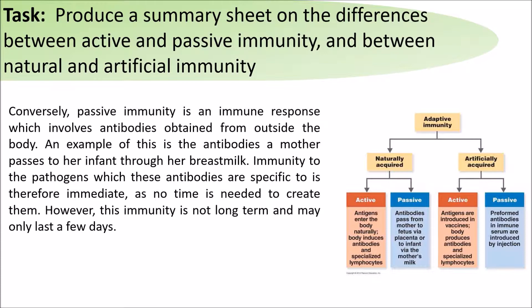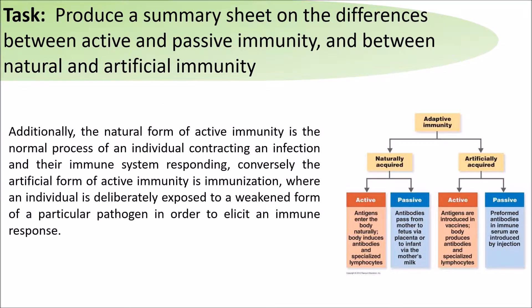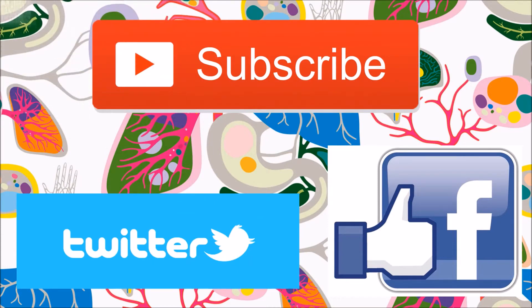The natural form of active immunity is a normal process of an individual contracting an infection and their immune system responding. Contrastingly, the artificial form of active immunity is immunization, where an individual is deliberately exposed to a weakened form of a particular pathogen in order to elicit an immune response.